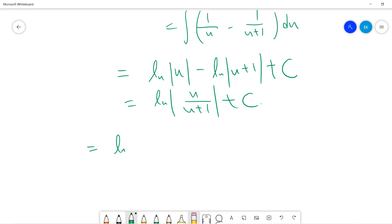So the answer will be ln(u divided by u plus 1) plus constant. Okay, so it's ln(exponential x divided by exponential x plus 1) plus constant, which is ln(1 divided by 1 plus exponential negative x) plus constant. Okay, so this should be the answer.